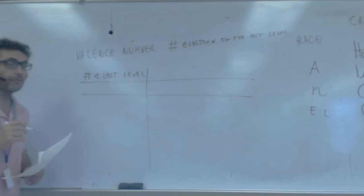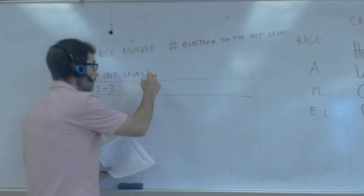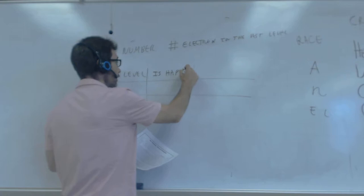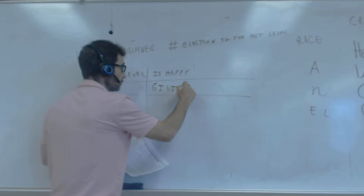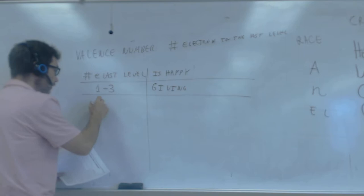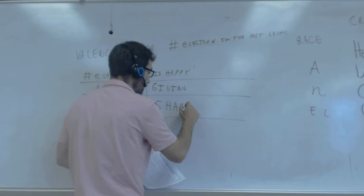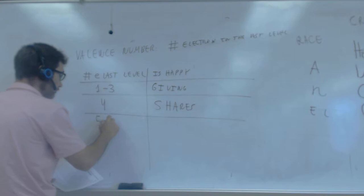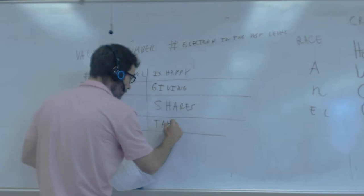If the number of electrons in the last level — the balance — is from one to three, the atom is happy giving those electrons; he gives electrons. If it's four, it shares electrons — we'll see how next week. And if it has from five to seven, it tries to take electrons. Taking makes them happy. And if it's eight, it's already happy.